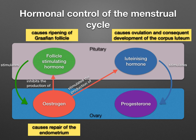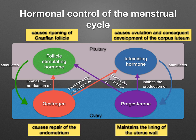Oestrogen causes the rebuilding of the endometrium after menstruation, and it also stimulates the pituitary gland to produce LH. It also inhibits the production of FSH. Progesterone maintains the endometrium of the uterus in readiness to receive the blastocyst, and it also inhibits the production of FSH from the pituitary gland.